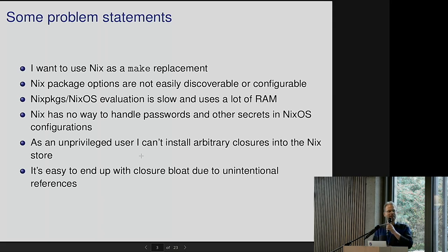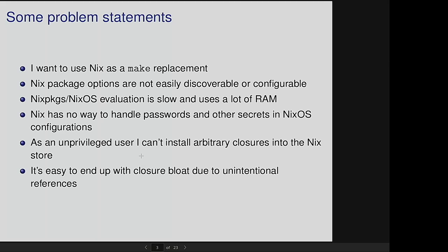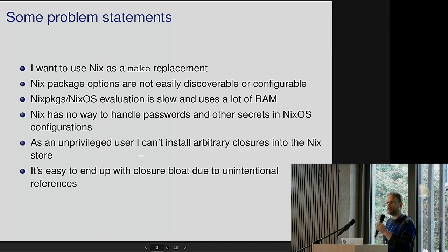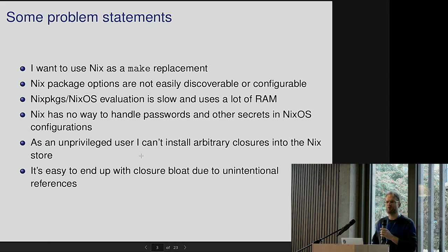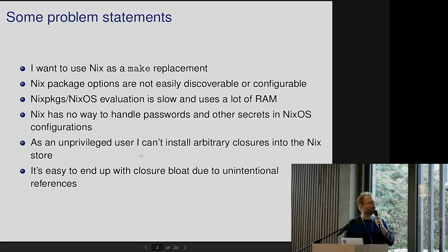Some problem statements — things that are currently problematic with Nix or things I would like to do but can't at the moment. One is: I would like to use Nix as a make replacement or a Bazel replacement. Nix has nice features — a purely functional language, reproducible builds, isolation — and we do this for large things like packages and small things like configuration files in NixOS. So it seems like it should be a perfect build tool for building C source files or whatever other language you want to build, but there are reasons you currently can't really do that.